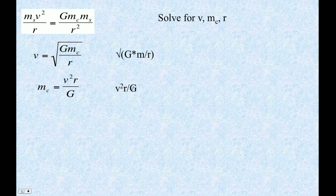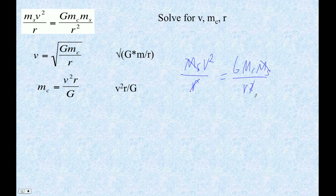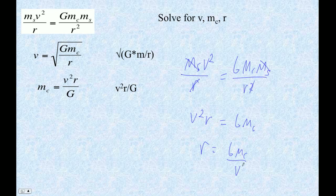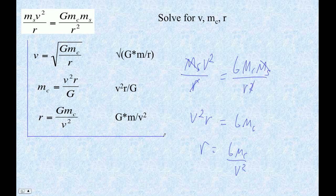Now let's solve for the radius R. Starting with Ms·V² over R equals G·Mc·Ms over R squared, satellite mass cancels. Multiplying both sides by R and cross-multiplying — this times this equals this times this — gives V²·R equals G·Mc. Divide both sides by V squared, and you get R equals G·Mc over V squared. On your calculator: G times M divided by V squared. Write these down in your notes.